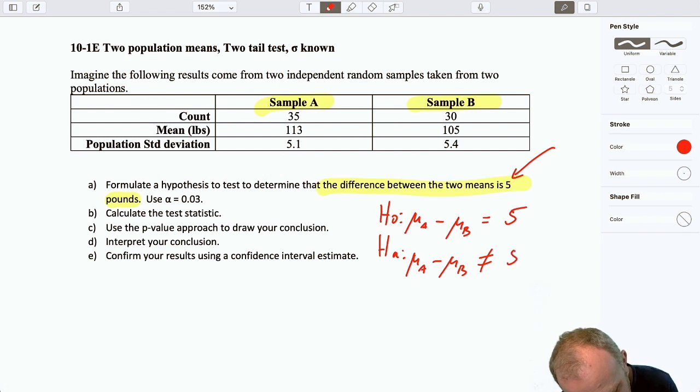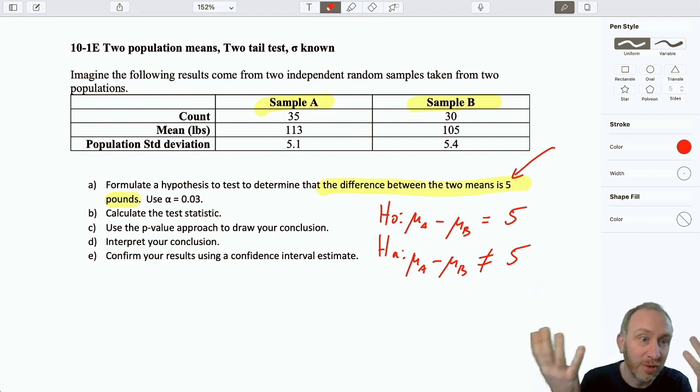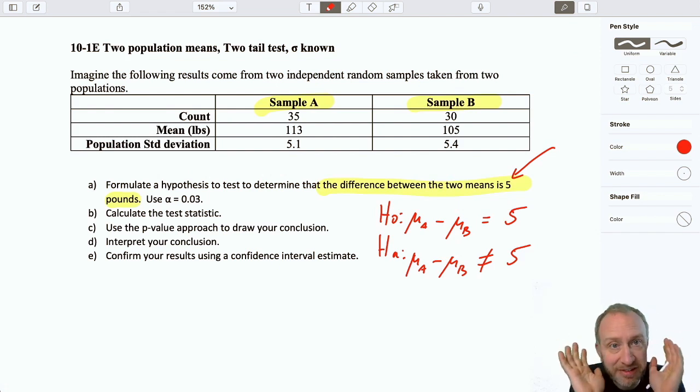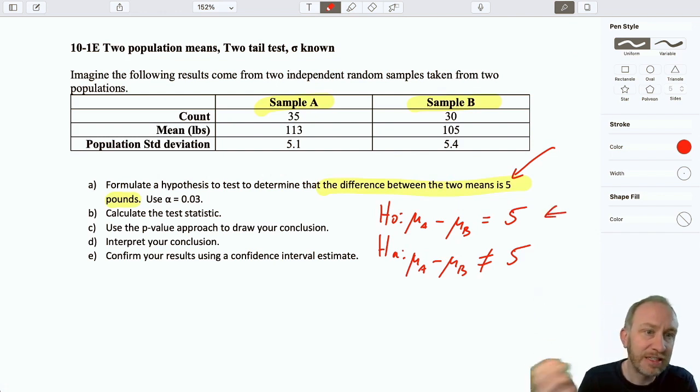I know that this is a two-tail test because it's not asking me to see if it's at least 5 pounds, more than 5 pounds, less than 5 pounds. Those are those clues, those key words that bring us towards a one-tail test, either the lower tail or the upper tail. This is just saying, test, is it equal to 5? Is it 5 or not? Our null hypothesis says, yes, it's equal to 5. Or at least I'm unable to say that it's not 5. And the alternative says, no, I have evidence to show that it's not 5 pounds.